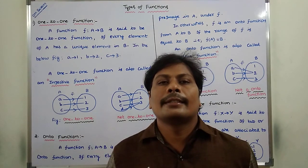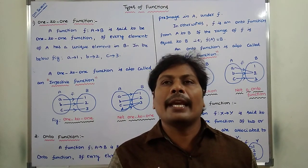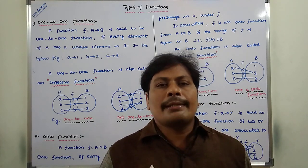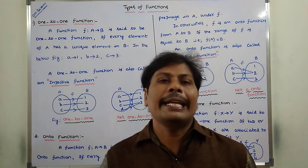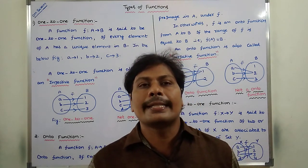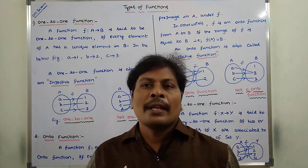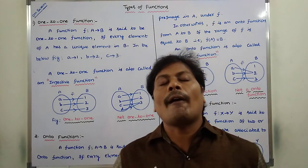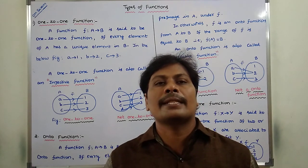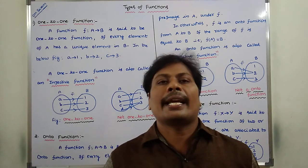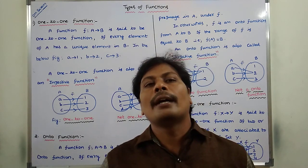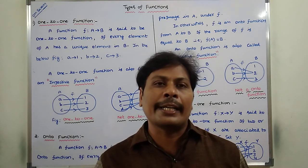Hi friends, today I am giving a lecture on types of functions in discrete mathematics. It is one of the most important concepts in discrete mathematics. There are four types of functions available: the first one is one-to-one function, the second one is onto function, the third one is many-to-one function, and the fourth one is identity function.